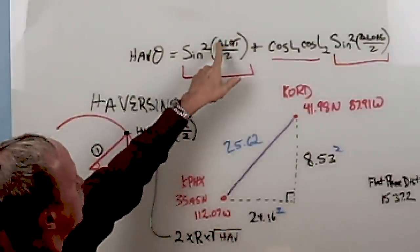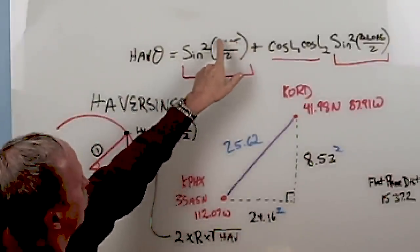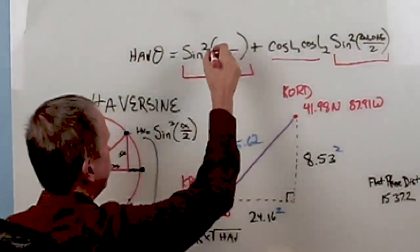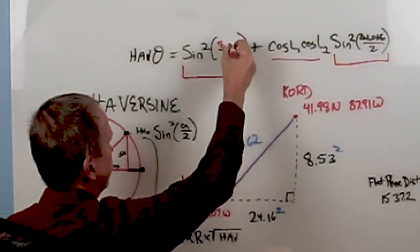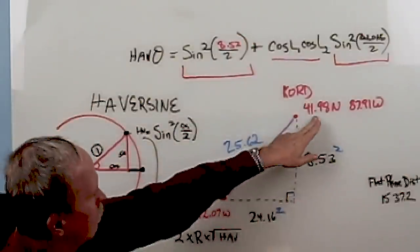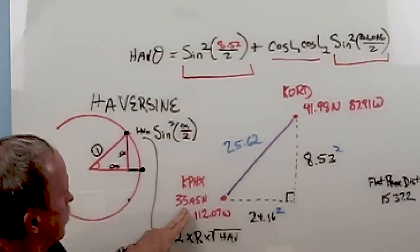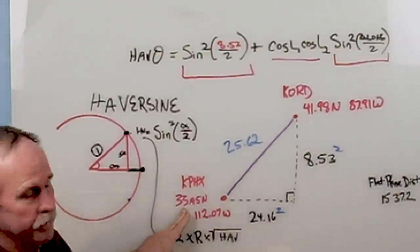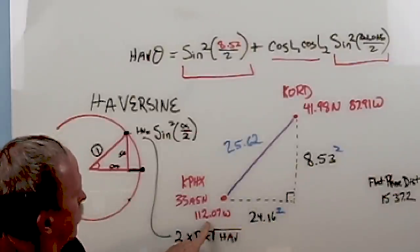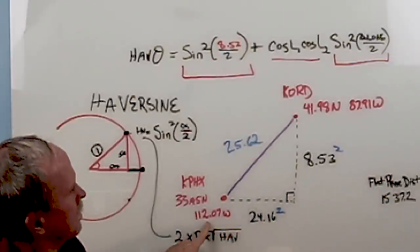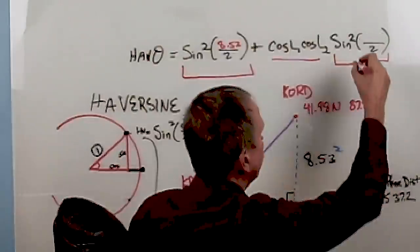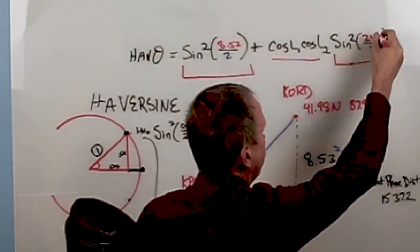Well here, the change in latitude is going to be 8.53 degrees. That's basically 41.98 minus 33.45. The change in longitude will be 112.07 to 87.91. And that comes out to 24.16. So now we have our numbers there.